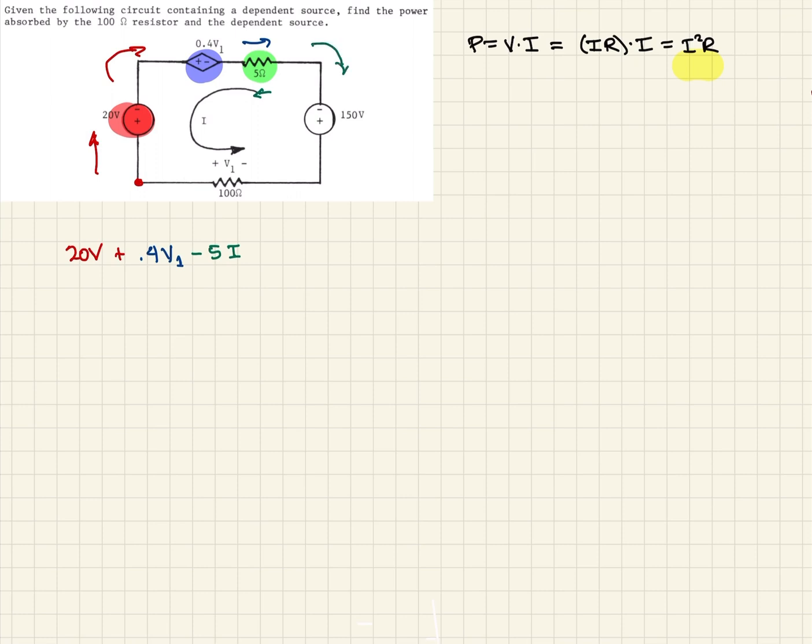We continue around our circle and now we come to another voltage source. This one, we hit the negative sign first. Therefore, this will be negative 150 volts.